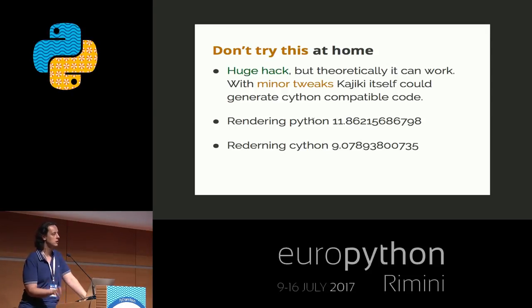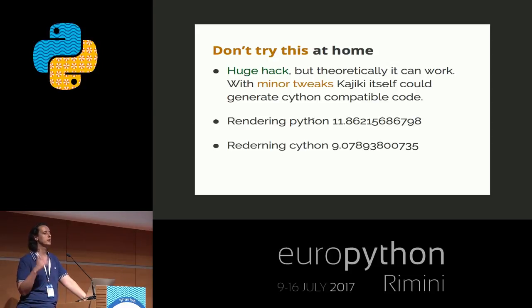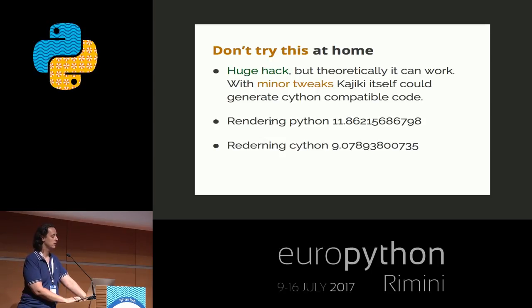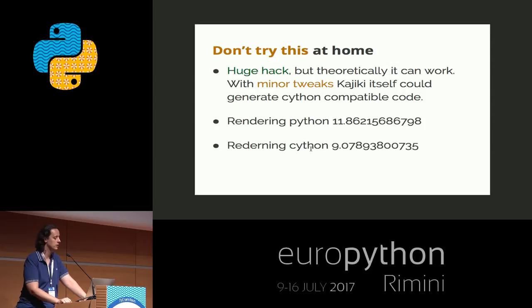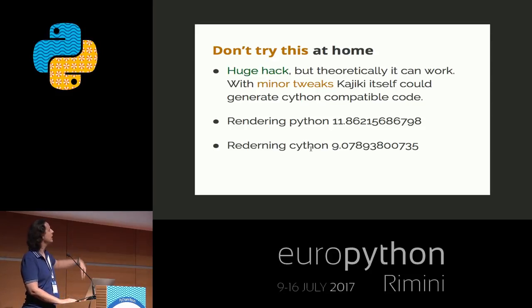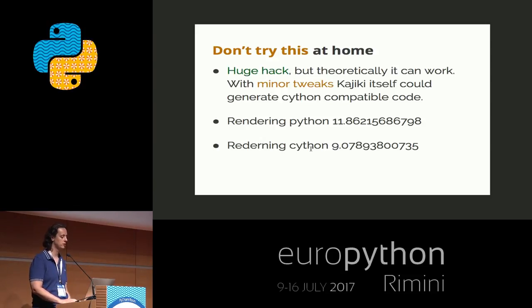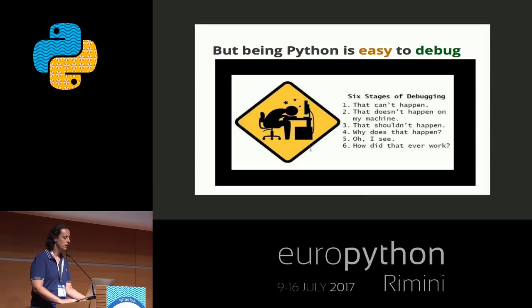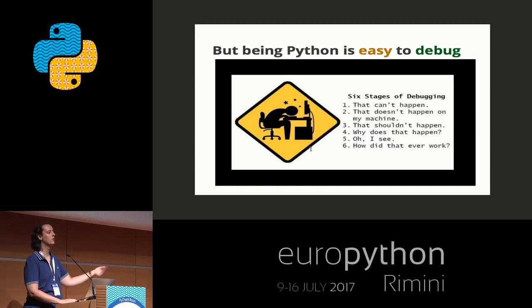There is a benchmark. You can see that without much changes, just by wrapping the code into Cython, I got a speed up from 12 seconds to 9 seconds. I'm sure that if anyone invested time in optimizing it, it would be at least half of that — like four or five times faster than Mako. And the fact that it's pure Python means that it's easy to debug. Any tool you know that works with Python works with Kajiki.